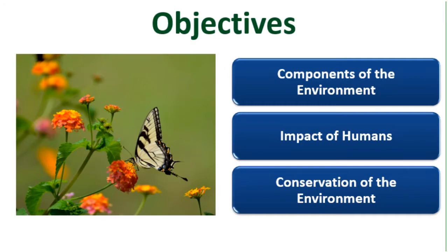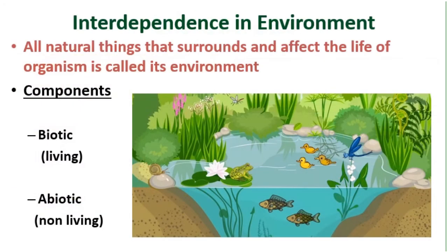Our natural surroundings make up our environment. This environment has two components: biotic and abiotic. All living things that surround us make up the biotic component of the environment. Non-living things like the sun, air, water, etc. make up the abiotic component.